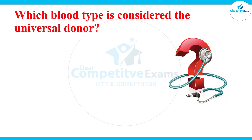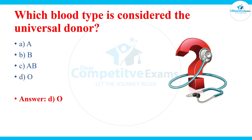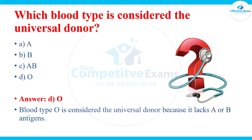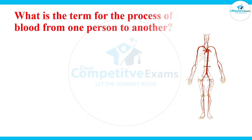Which blood type is considered the universal donor? The answers are A, B, AB, and O. The correct answer is O. Blood type O is considered the universal donor because it lacks A or B antigens.